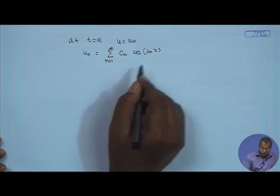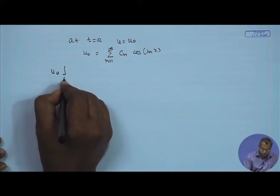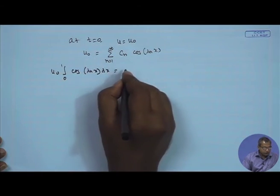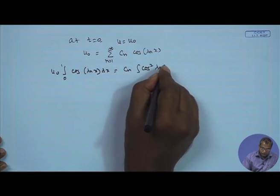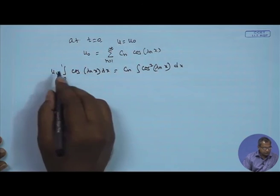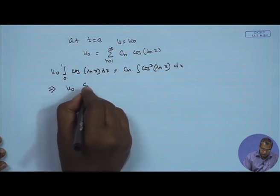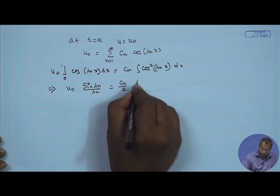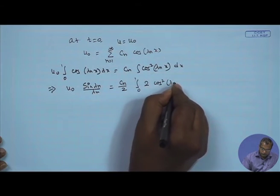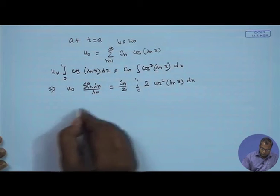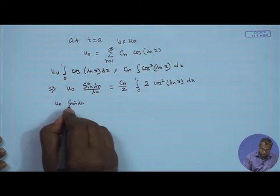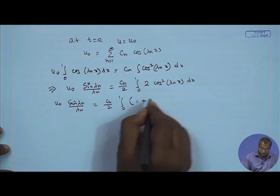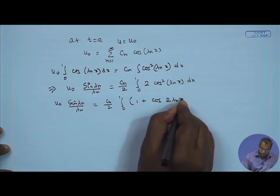Applying the initial condition: u_naught = summation of c_n cos(λ_n x) from n=1 to infinity. We utilize the orthogonality property of the eigenfunctions. Multiplying both sides by cos(λ_n x) and integrating from 0 to 1, the left side gives u_0 sin(λ_n)/λ_n and the right side gives c_n times the integral of cos²(λ_n x) dx.